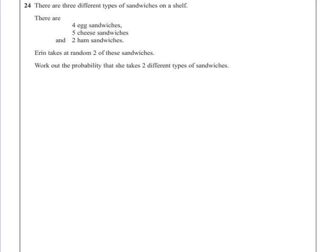Question 24. There are three different types of sandwiches on a shelf: four egg sandwiches, five cheese sandwiches, and two ham sandwiches. Erin takes a random two of these sandwiches. Work out the probability that she takes two different types of sandwiches.